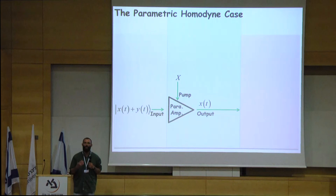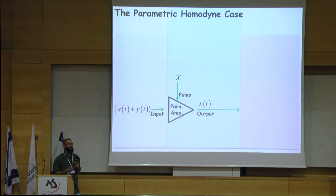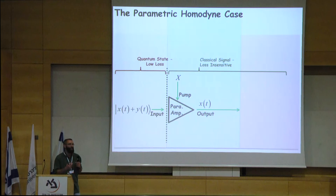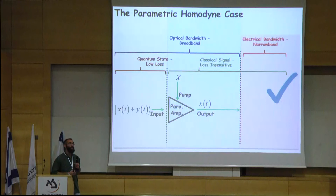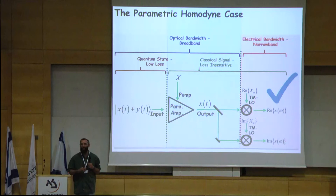The parametric amplifier amplifies the information from the quantum region to the classical region without losing the optical bandwidth. The output is still optical. It is only later on, when we actually apply whichever detection we want, that we lose the bandwidth. Now, since the information is classical, we can split it into two, so that we can measure both the real part and the imaginary part of the two-mode quadratures.